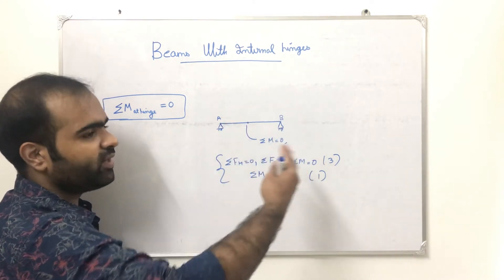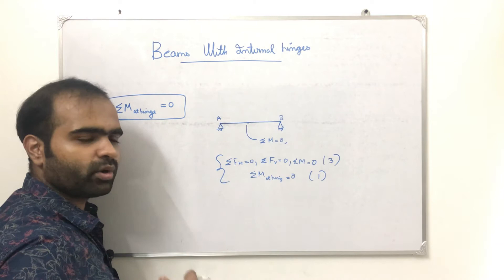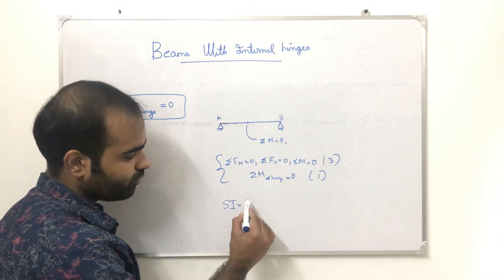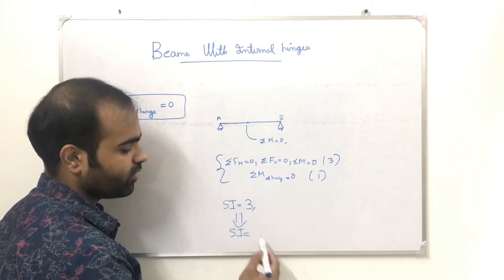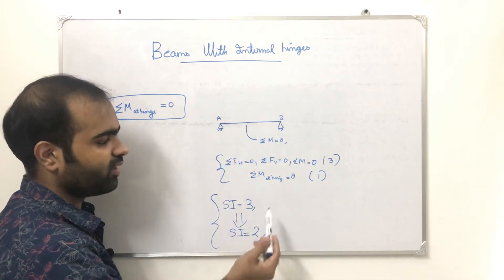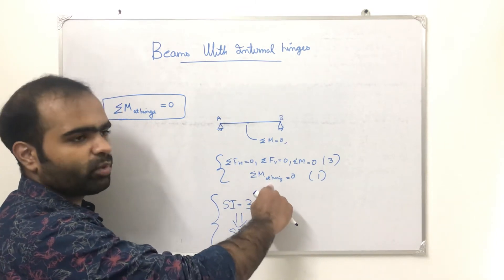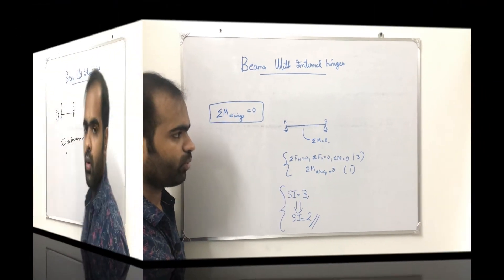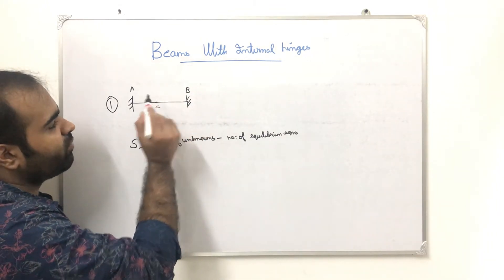A hinge comes from the indeterminate structure. If we add a hinge, we add an additional equation — the momentum at that point will be 0. So the total number of equations of equilibrium becomes 4. There is a hinge at that point.